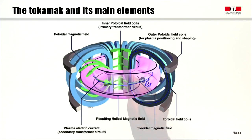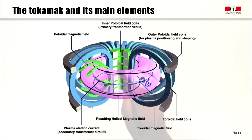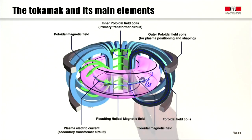The second element is the method to produce the plasma current. We do this by transformer action. We drive a current in the inner poloidal field coils — this green structure here — which is the primary of the transformer circuit. The plasma itself, this pink element, is the secondary of the transformer circuit. By producing a flux swing through the inner poloidal field coils, ramping the current up and down, an electric field is driven in the toroidal direction, which produces the plasma current.